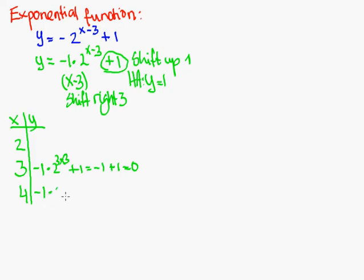You do that here. You do 4 minus 3 plus 1. That's 2 to the first, so that's 2. So this becomes a negative 2 plus 1. So that's a negative 1.